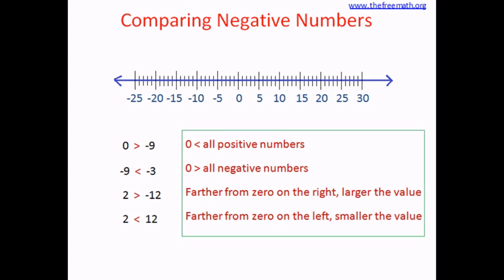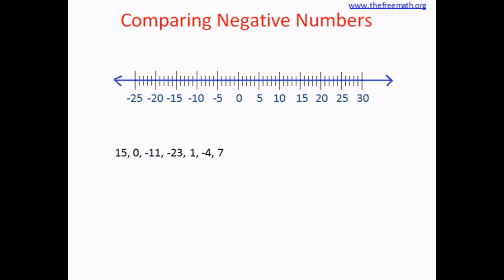Now let's order some numbers in ascending or descending order. The first set is: 15, 0, negative 11, negative 23, 1, negative 4, and 7 — arrange in ascending order, meaning the smallest comes first. The smallest is negative 23, since it is the leftmost on the number line. So the order is: negative 23, negative 11, negative 4, 0, 1, 7, and 15, going from left to right.